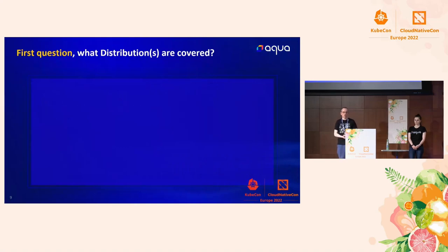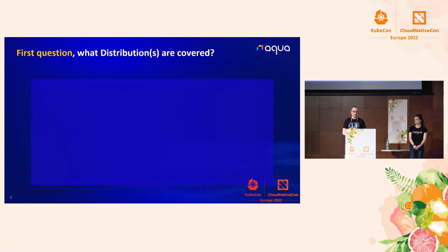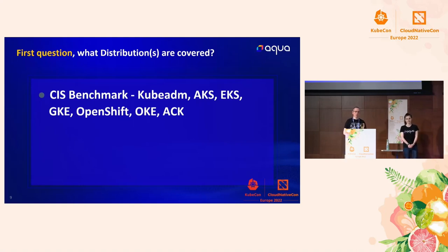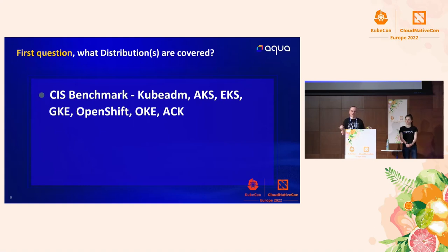First question: which distributions of Kubernetes are covered by the standard? There are 132 different Kubernetes distributions, products, or services. CIS benchmark covers KubeADM, AKS, EKS, GKE, OpenShift, OKE (Oracle), and ACK (Alibaba). If you're using one of those, you can find the document that actually applies to your distribution. If you're using any other type of Kubernetes, you can still try to use the CIS benchmark, but be aware that some findings might be false positives or false negatives — things like file paths may not match.